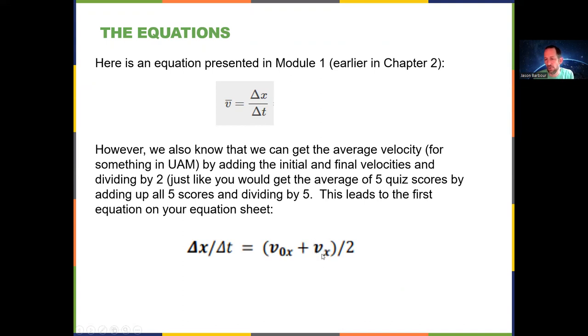Okay, so remember, there's no F here. It's implied that when there's not a 0, that it is final. Okay, so this is average velocity and this is average velocity, so they're equal to each other. And that's one of the equations on your equation sheet.